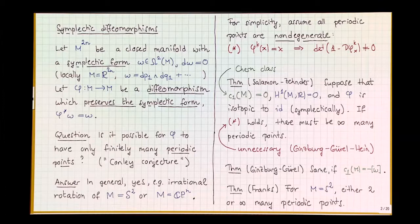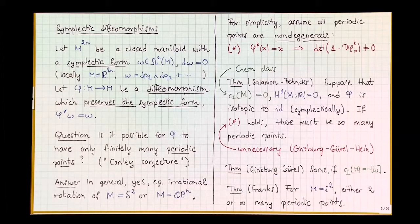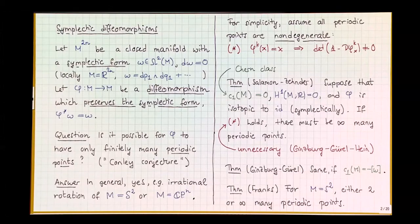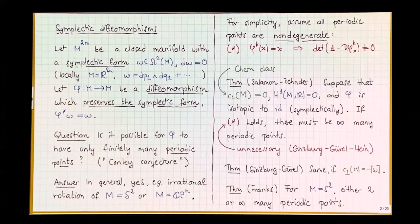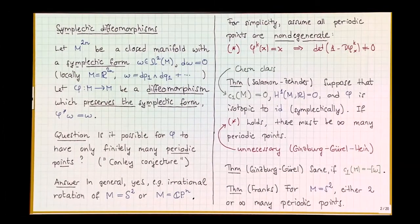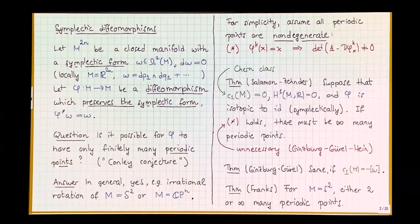There are topological conditions: the map should be isotopic to the identity — deformable to the identity through symplectic maps — and there's a condition on first homology. The important condition, which the sphere or projective space do not satisfy, is that every symplectic manifold has a first Chern class. This gives a rough classification of symplectic manifolds, and you assume it is zero — sometimes called the Calabi-Yau condition. In that case, for a very large class, there always have to be infinitely many periodic points. Ginzburg and Gurel also showed that if the first Chern class equals minus the symplectic class, you again have infinitely many periodic points.